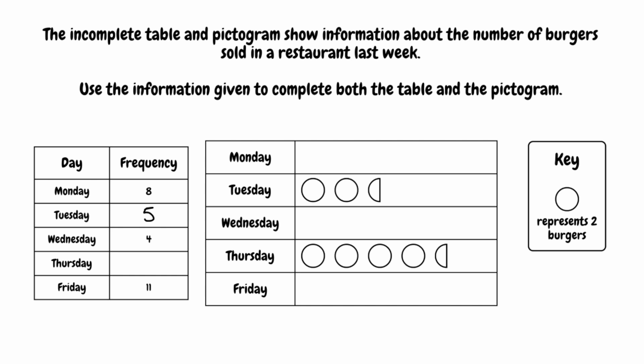We're going to do exactly the same thing for Thursday. All of the complete circles represent two burgers each, and the semicircle will represent one burger. So if we add all those numbers together, we've got two times four, which is eight, add on the one, that gives us nine. So nine burgers were sold on Thursday.